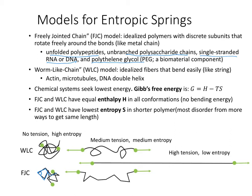The second model is the worm-like chain (WLC) model. Here, the idealized fibers bend easily and uniformly — we don't see sharp kinks; instead they're smooth, like string. Actin filaments, microtubules if long enough, and DNA double helices behave this way. A DNA double helix wants to be straight, but these are very tightly curled up in our cells, allowing that enormous length of DNA to fit in one cell — aided by histones — but without that, they would be a snarled-up, curly string. That is a worm-like chain.